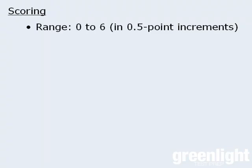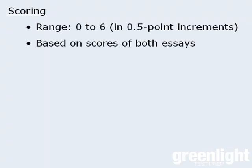Now speaking of scoring, your final score for the analytical writing section will range from 0 to 6, and it is based on the scores you receive on your two essays.